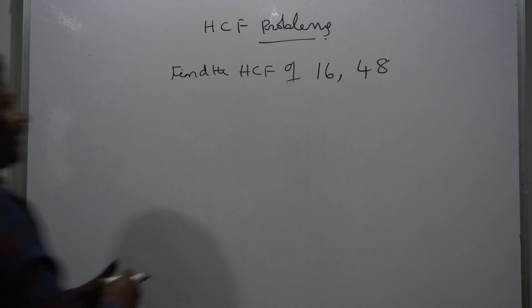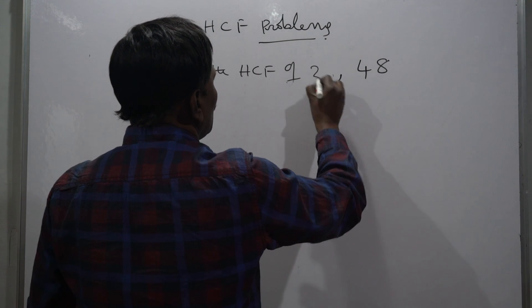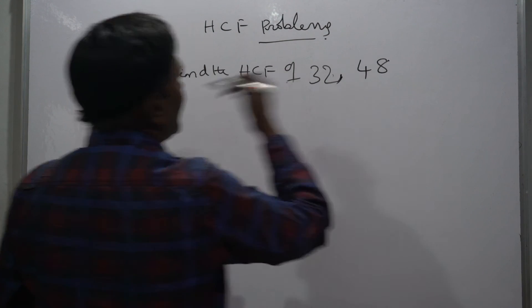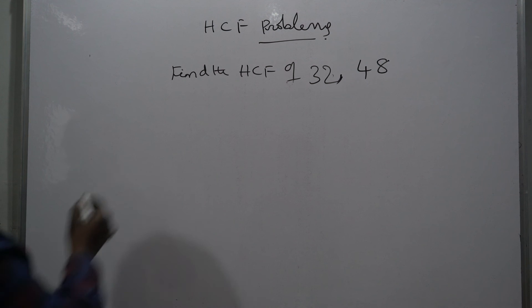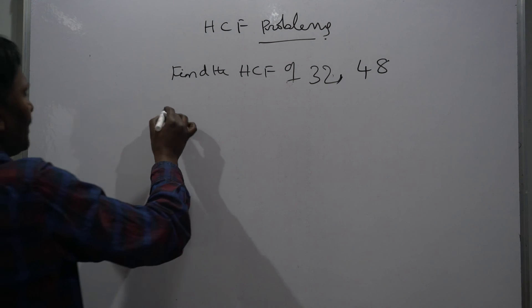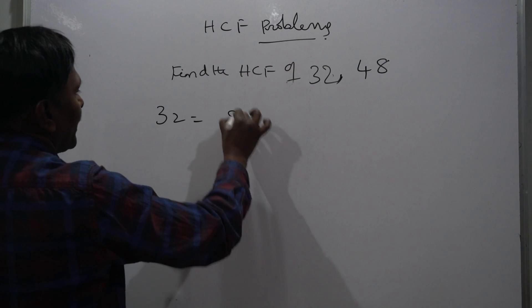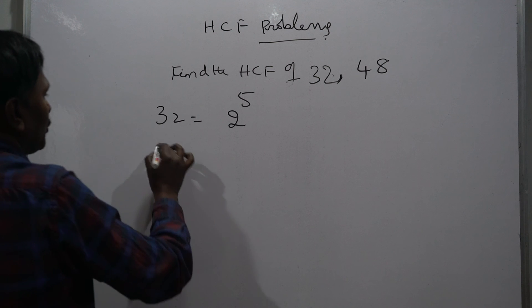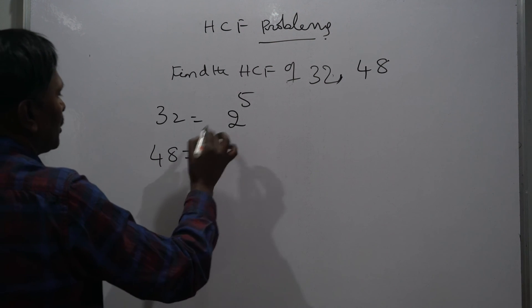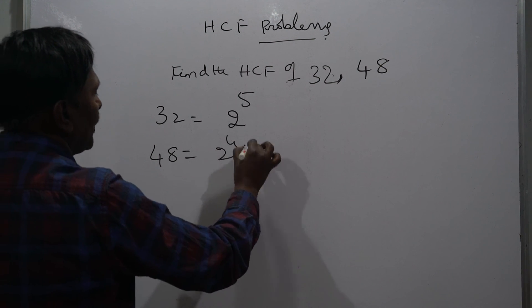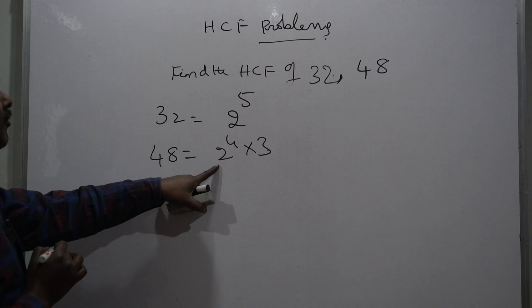Find the HCF of 32 and 48. 32 can be written as 2 to the power 5. 48 can be written as 2 to the power 4 into 3.